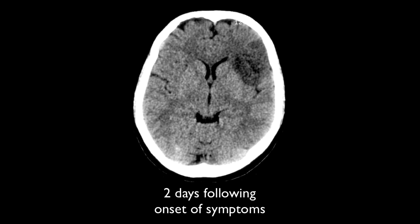Let's start off by looking at a case. This patient presented two days following onset of right-sided weakness with a well-demarcated low-density region in the superior division of the left middle cerebral artery territory. Note that the caudate head and lentiform nucleus are spared, suggesting that the most likely embolus lodged in an M2 branch, sparing the M1 branch from which the lenticular striate perforators originate.